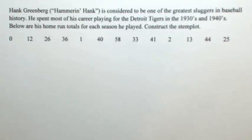Hank Greenberg, nicknamed Hammerin' Hank, is considered to be one of the greatest sluggers in baseball history. He spent most of his career playing for the Detroit Tigers in the 1930s and 1940s. Below are his home run totals for each season he played. Construct the stem plot.